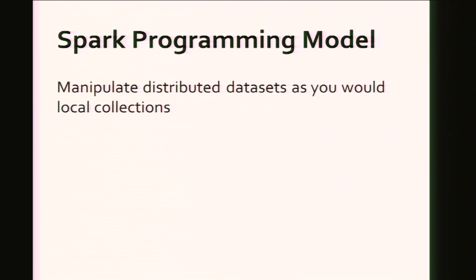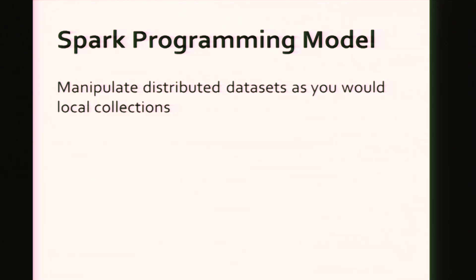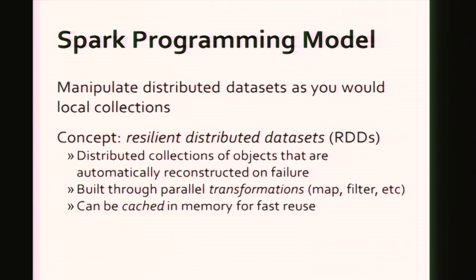In the AMP lab, we've developed a system called Spark that aims to give you a very simple programming model. The idea is that you'll manipulate distributed data sets the same way you would local collections in a normal single-machine program — the same thing you would do with a list, you can do with a distributed list. The abstraction you get is called Resilient Distributed Data Sets, or RDDs. These are distributed collections of records partitioned across your cluster, resilient in that the system will automatically rebuild them on failure. You get a wide array of parallel transformations like mapping or filtering. Another feature in Spark that you don't have in current big data systems is the ability to cache these in memory, which makes it possible to ask questions about them really quickly.